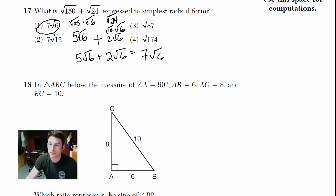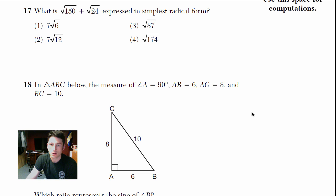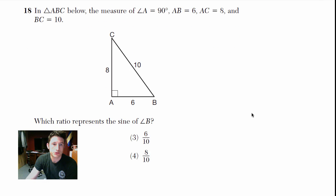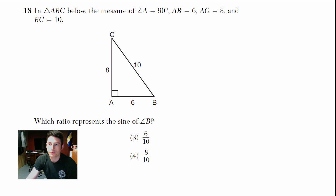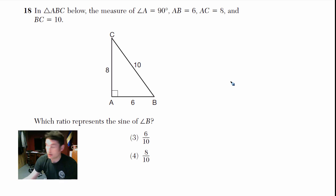Number 18: in the triangle, the measure of angle A is 90 degrees, AB equals 6, AC equals 8, and BC equals 10. They want to know what ratio represents the sine of angle B. Remember SOH CAH TOA — sine equals opposite over hypotenuse.